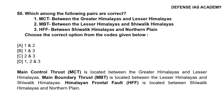Question 50: Which among the following pairs are correct? 1. MCT, between the Greater Himalayas and Lesser Himalayas; 2. MBT, between the Lesser Himalayas and the Shivalik Himalayas; 3. HFF, between the Shivalik Himalayas and the Northern Plain. The correct answer is option C, 2 and 3. Main Central Thrust (MCT) is located between the Greater Himalayas and the Lesser Himalayas. Main Boundary Thrust (MBT) is located between the Lesser Himalayas and the Shivalik Himalayas. Himalayan Frontal Fault is located between the Shivalik Himalayas and the Northern Plain.